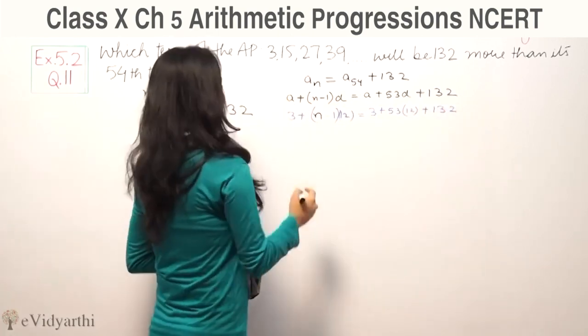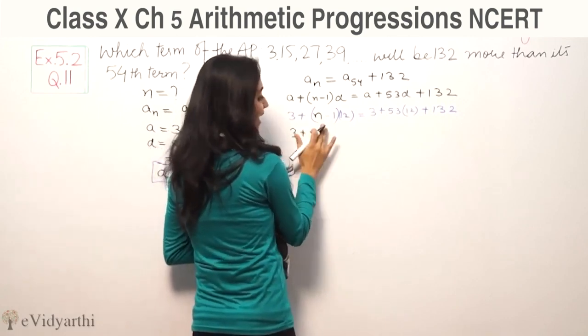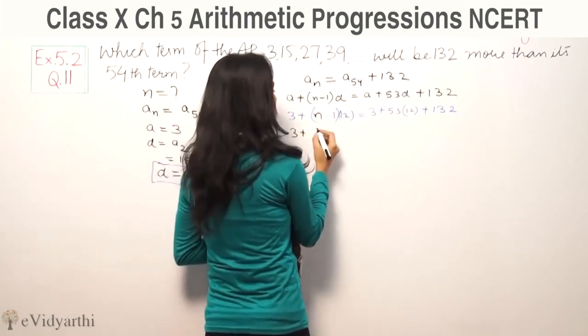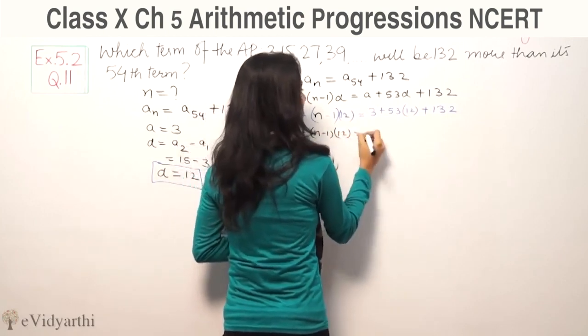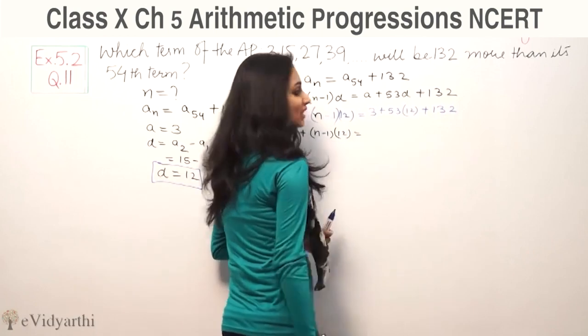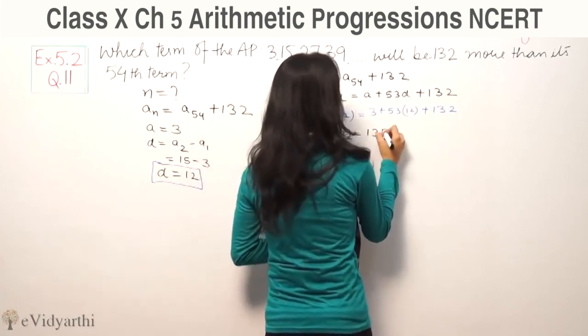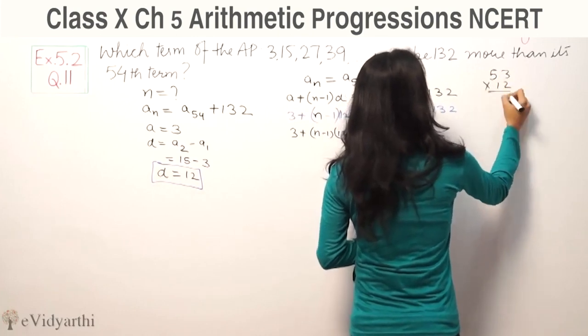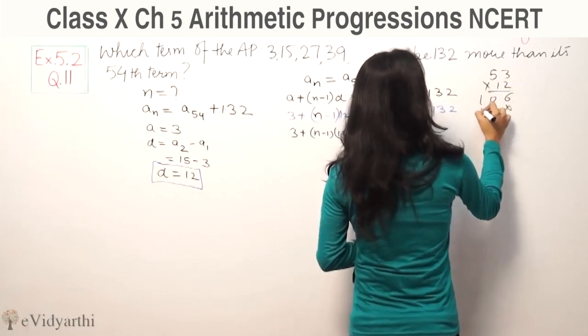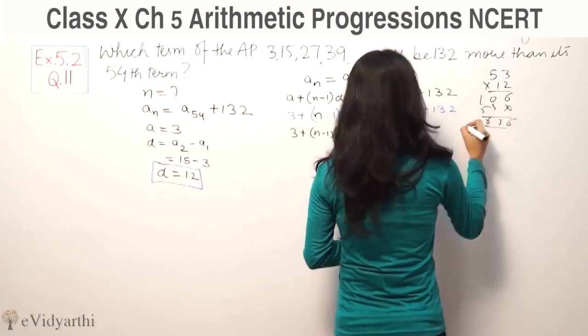So we have 3 plus n minus 1 times 12 equals 3 plus 53 times 12 plus 132. Calculating 53 times 12 gives us 636.